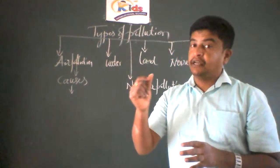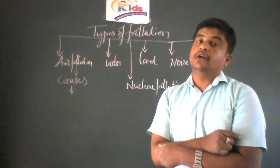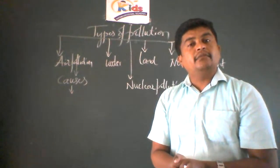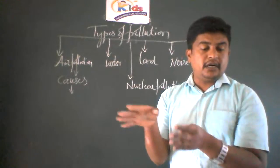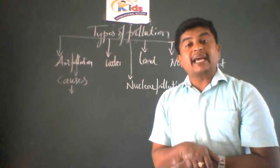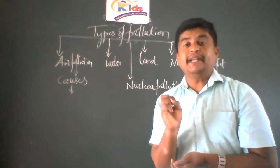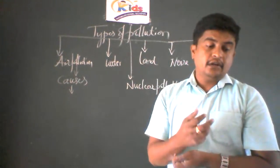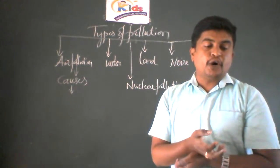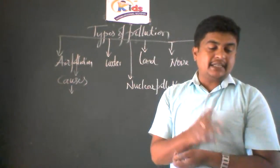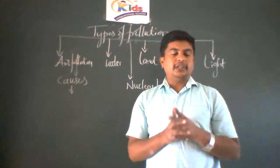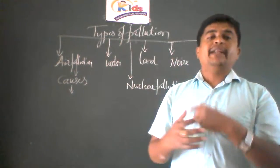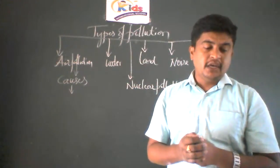Volcanic eruption and pollen disposal are natural causes. Human activities also result in air pollution. Man cuts down all the trees and sets up fire for those cut trees, which discharges smoke into the air and causes air pollution. Emissions from industries and factories are one of the major human causes.